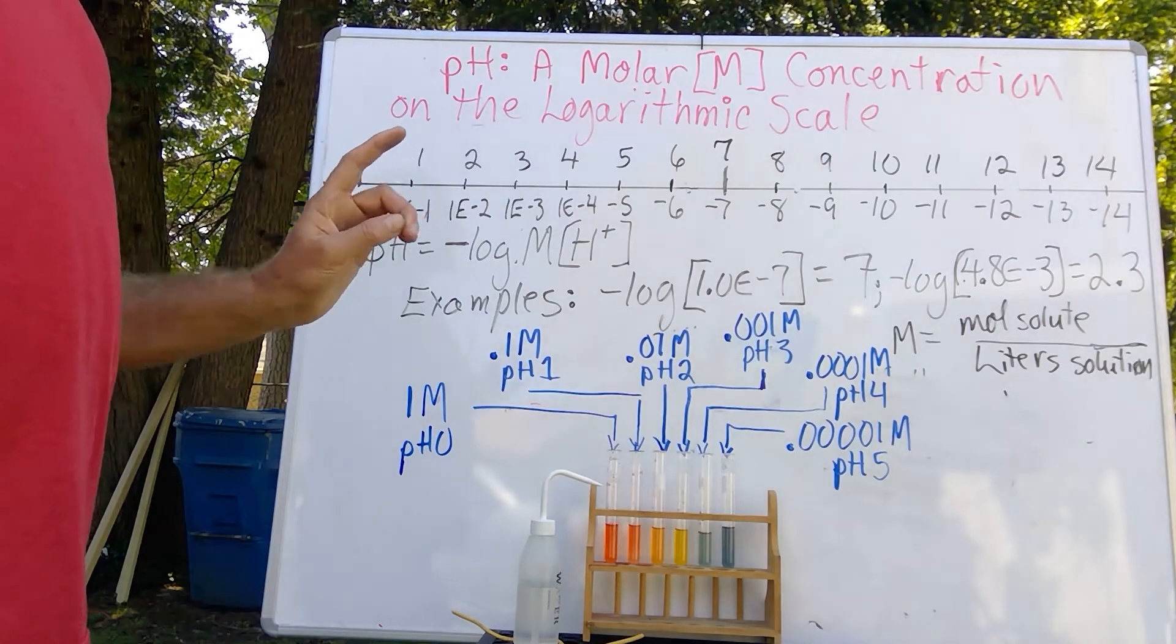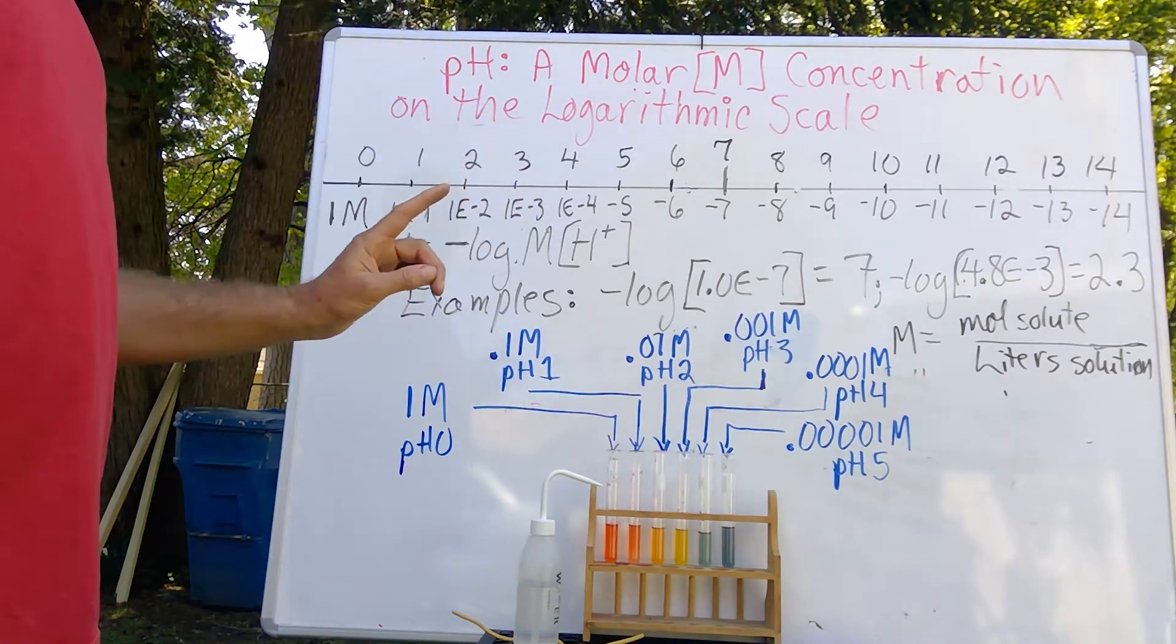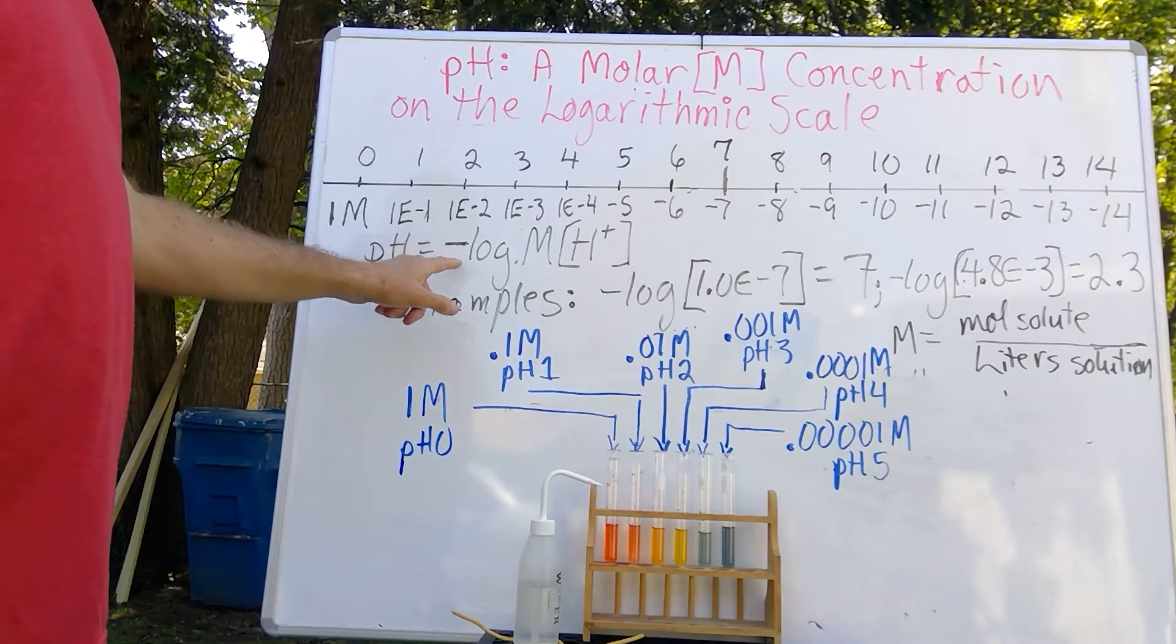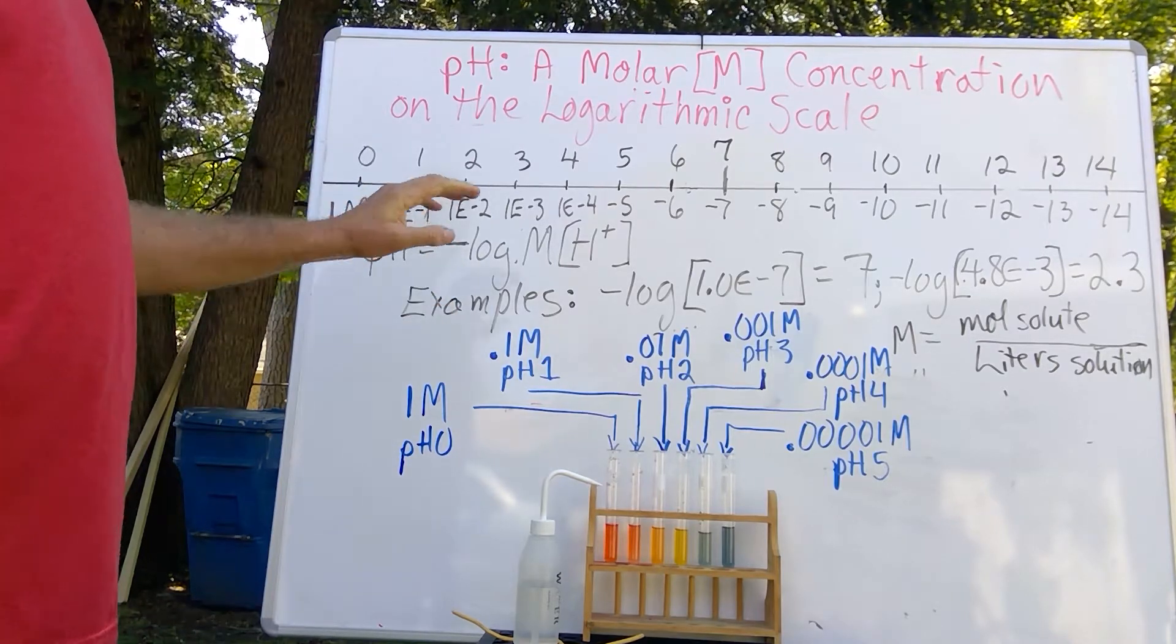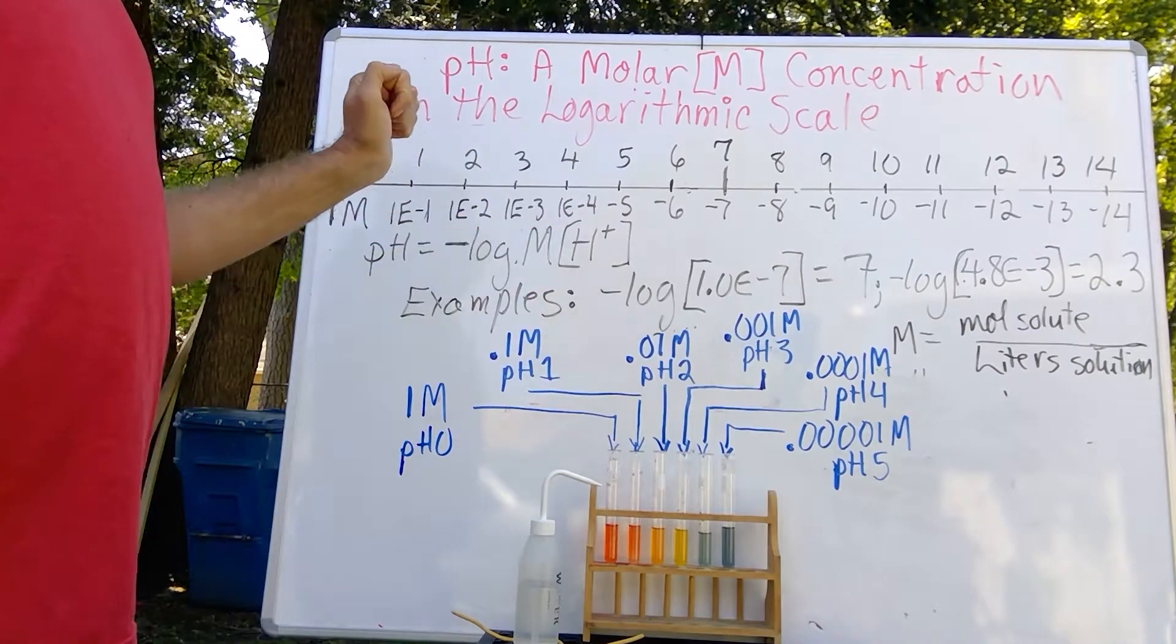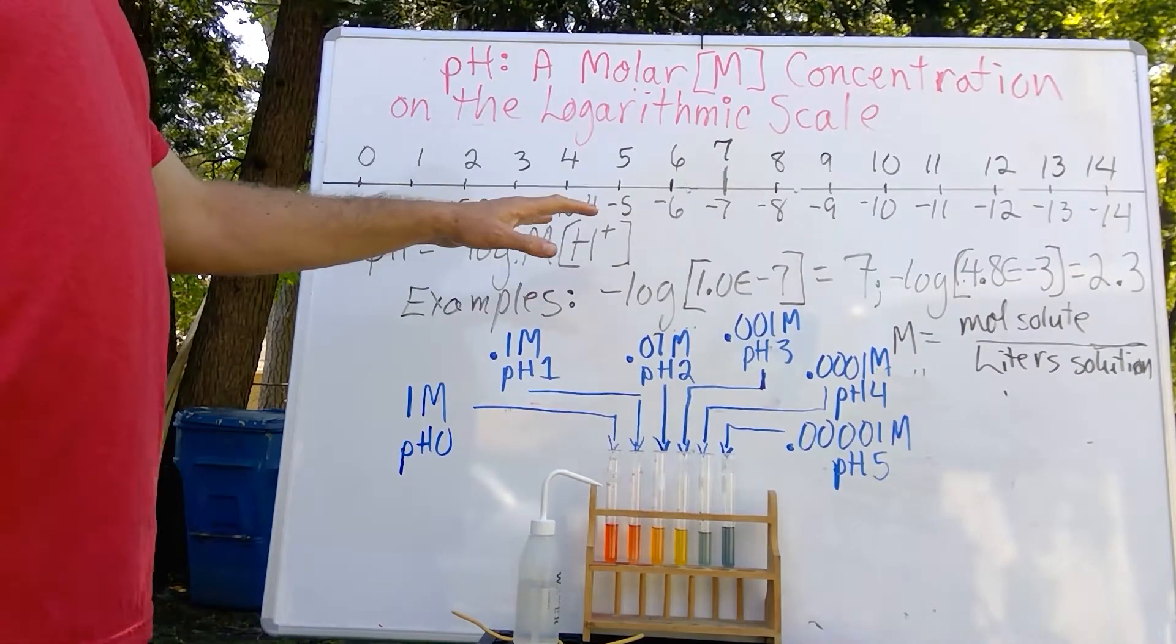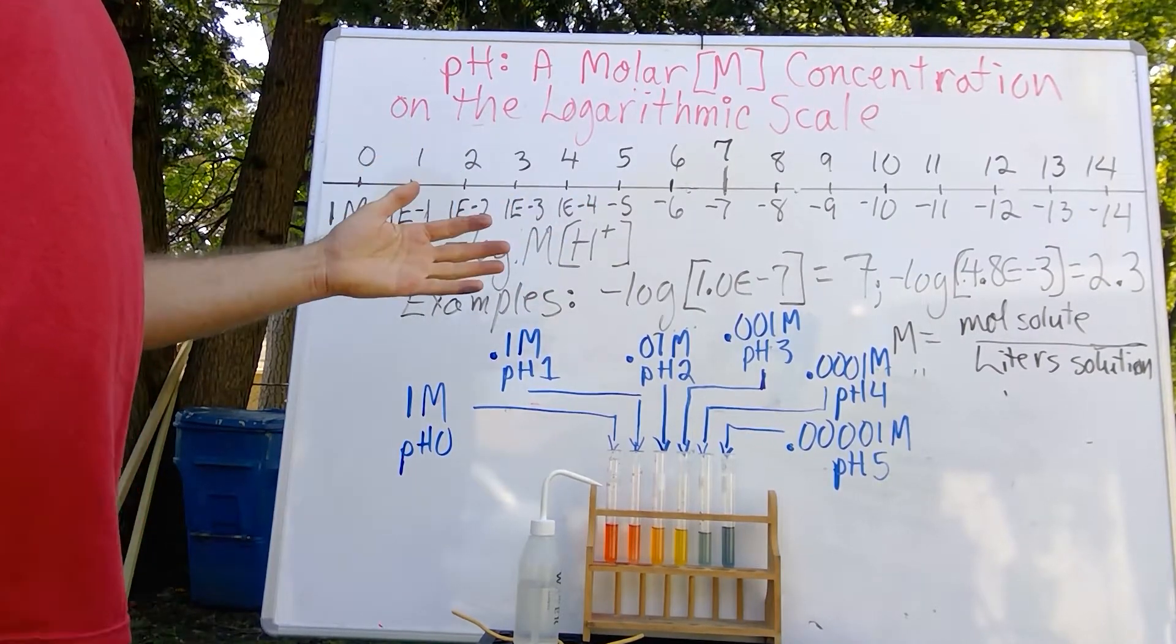This may seem counterintuitive, but this is because we're looking at it as a logarithmic value and actually a negative log value. Because if we took our log value of a concentration, we would wind up with negative numbers.